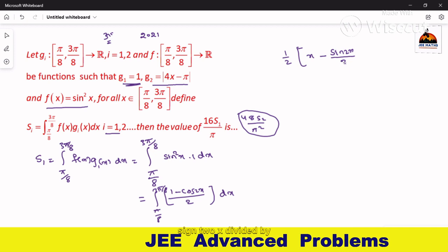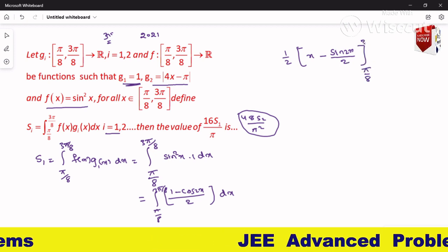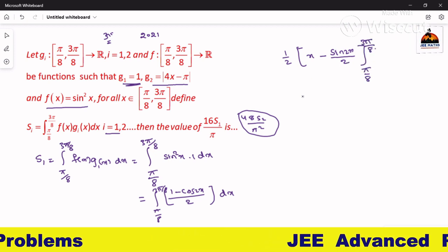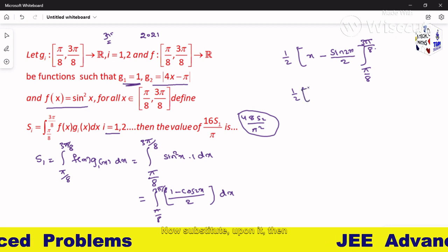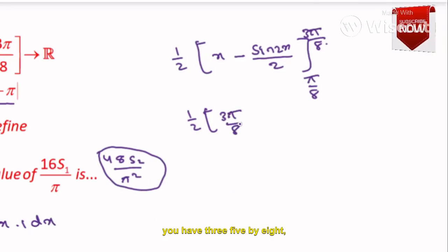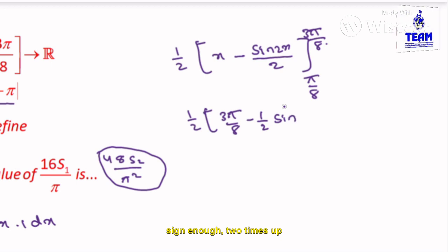Limits π/8 to 3π/8. Now substitute upper limits: 3π/8 minus 1 by 2 times sine of 2 times 3π/8, which is 3π/4. Upper limit is over, minus lower limit: if I substitute lower limit.